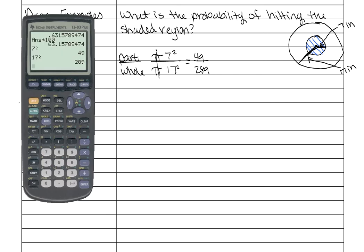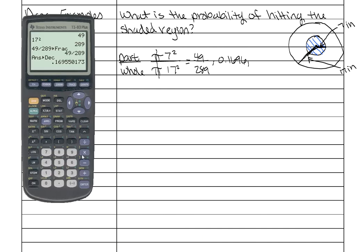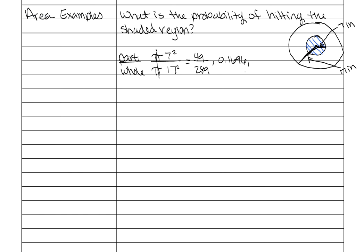So get your calculator back out and do 49 divided by 289. Math, enter, enter. And it doesn't. So that will be our ratio. We need to find our decimal. You can actually do that with math also. If you look right underneath, fraction is decimal. So it would be math two enter would turn that into a decimal. So point one six nine six will be our decimal. So zero point one six nine six and then our percent. You multiply this times a hundred if you can't move the decimal over. And it's sixteen point nine six percent.